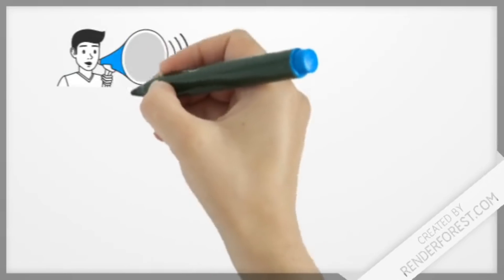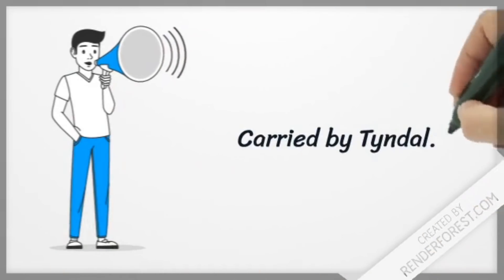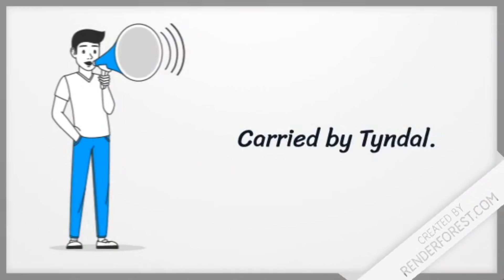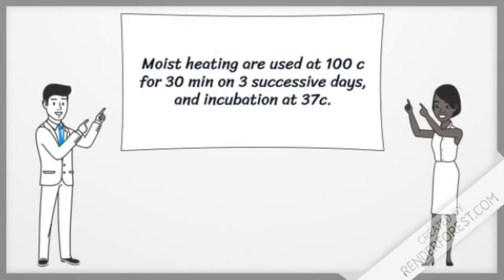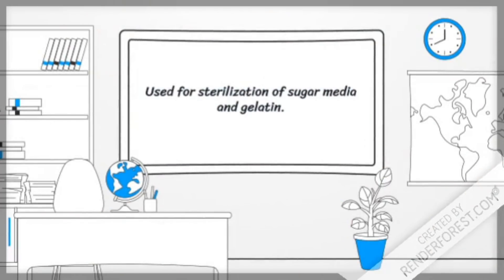Tyndallization method. This method is used by Tyndall. The moist heating is used at a temperature of 100 degrees for 30 minutes for consecutive days and then it is placed in an incubator at a temperature of 37 degrees. It is used to sterilize sugar media and gelatine.